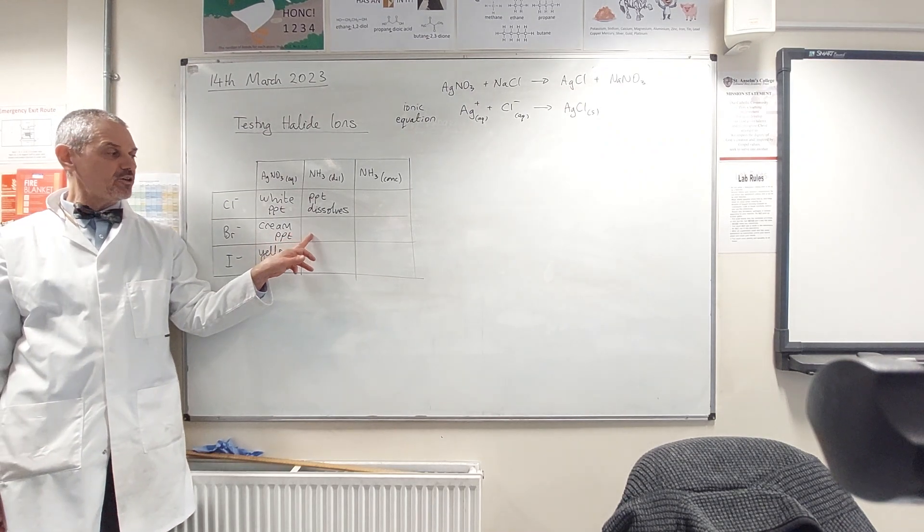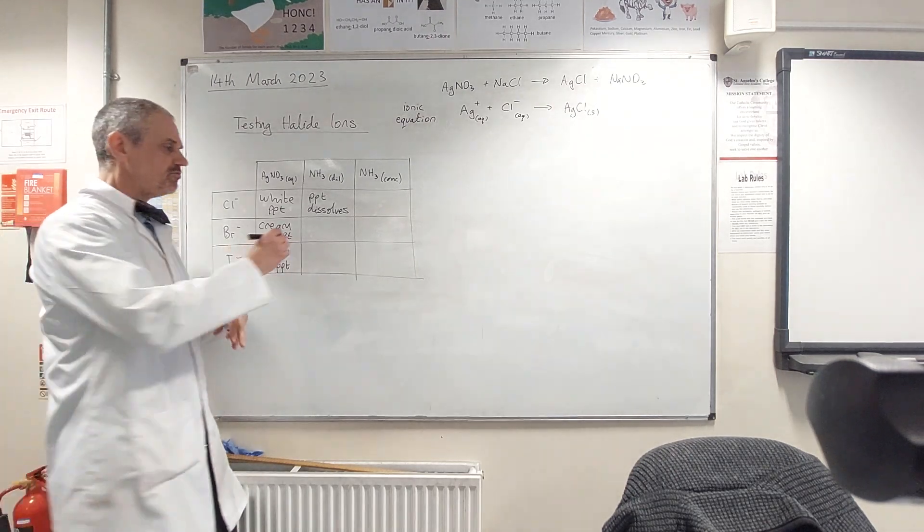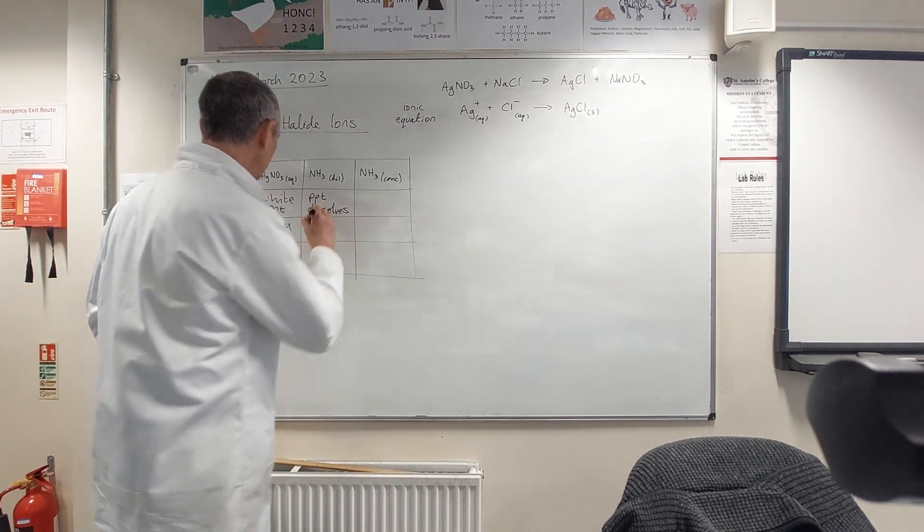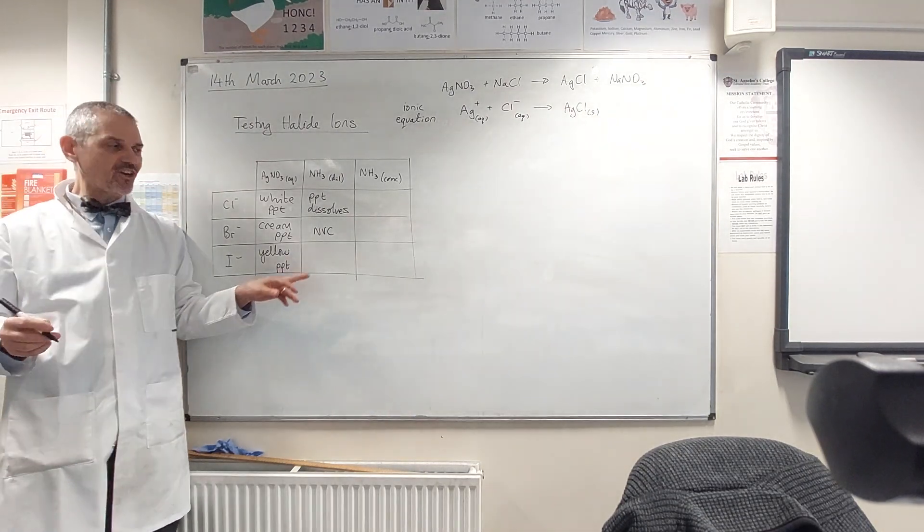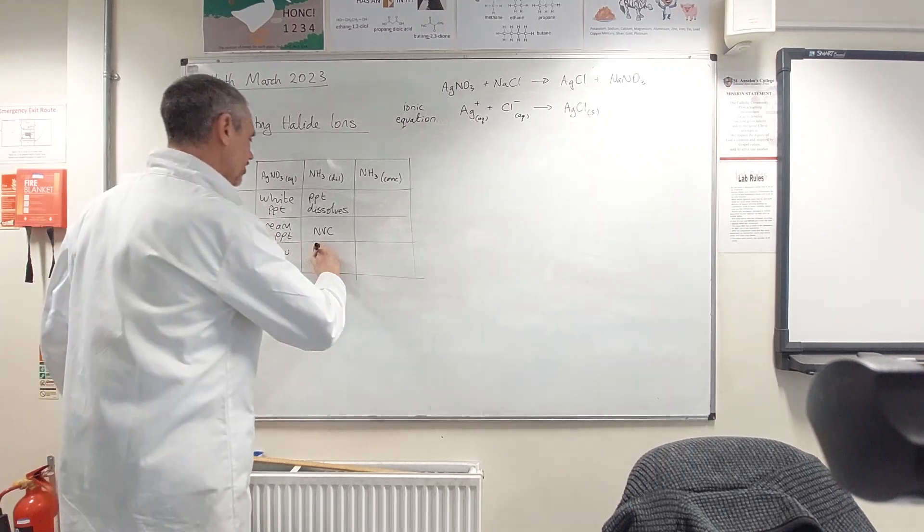Okay, if we add dilute ammonia to our cream precipitate for bromide. No visible change. Okay, just we just end up with a slightly diluted precipitate. And our yellow precipitate for iodide? No visible change. No visible change there.